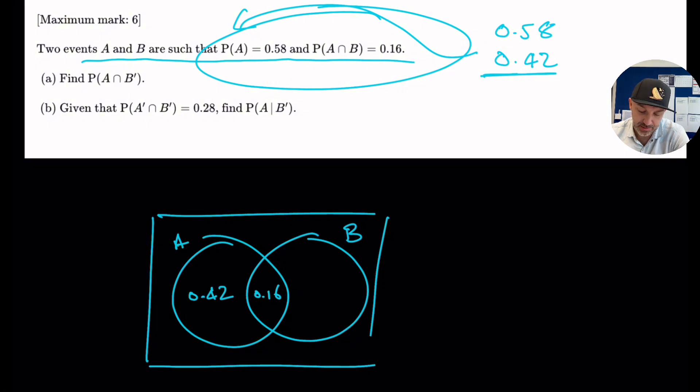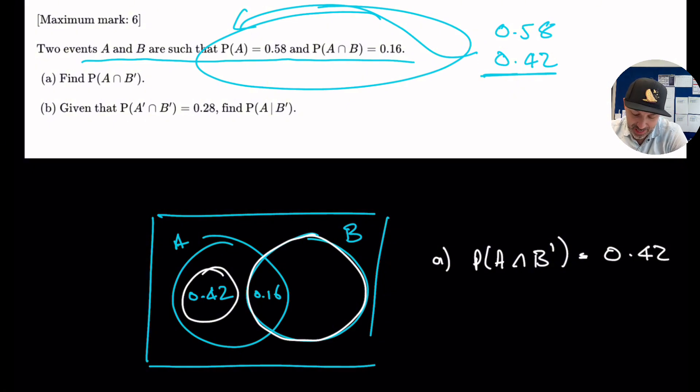We also know then that find the probability of A given not B. Okay. So the probability of A and not B will be, so think about this. So not B and A, so that is 0.42. So the power A is probability of A and not B is 0.42.